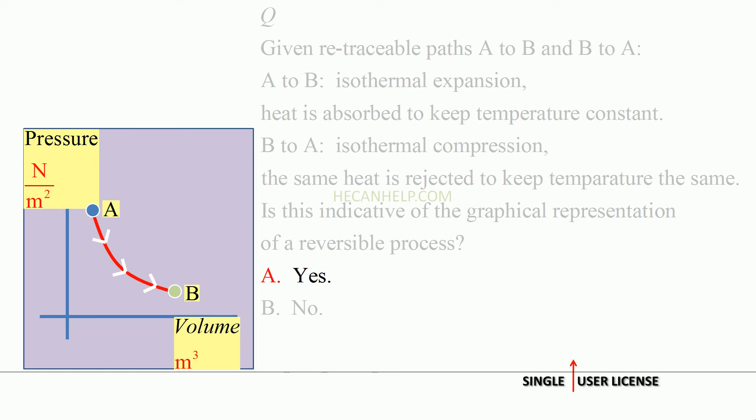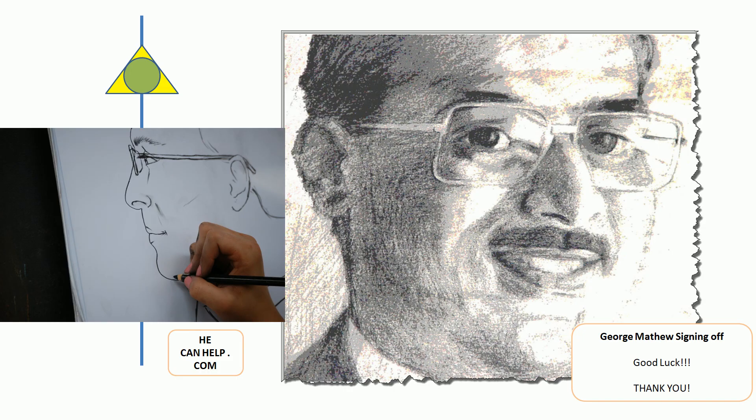...the path. It came through C. On the way back, it has to go through point C. This is George Matthew. Good luck to you.